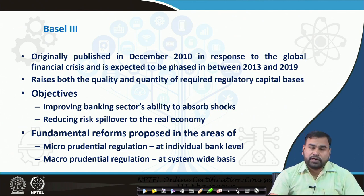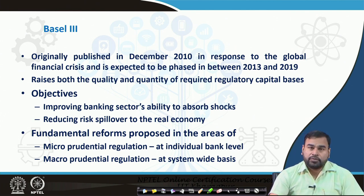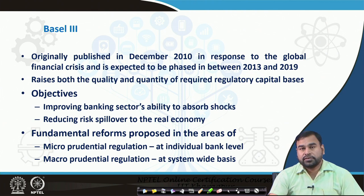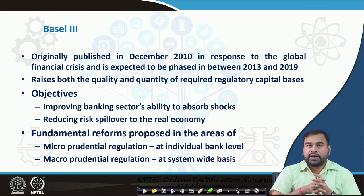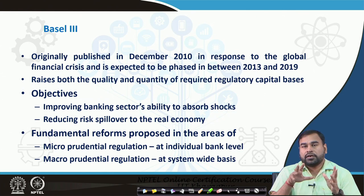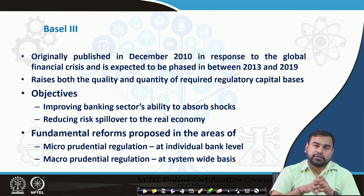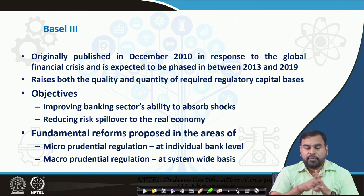There are two major broad regulations: one covers the individual bank level, called microprudential regulations, and the other covers the system-wide basis, called macroprudential regulations. Some guidelines target individual bank policies and some target the whole aggregate economic policies. By that, coherence can be maintained between individual banks and the banking sector with respect to real economic indicators, so the probability of failure in the system will be relatively less.